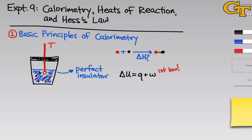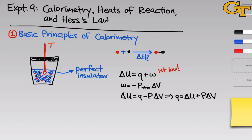Our calorimeter will be open to the air, meaning we're under constant pressure conditions — the constant pressure being the pressure imposed by the atmosphere. So the work associated with the change is equal to negative P delta V, the negative pressure times the change in volume. Substituting this into the first law gives delta U equals Q minus P delta V, and rearranging gives Q equals delta U plus P delta V. Since pressure is constant, delta P equals zero, which means the right-hand side corresponds to the change in the overall state function U plus PV, or what we call enthalpy. So Q equals delta H, meaning under constant pressure conditions, the heat absorbed or evolved by the reaction is equal to the change in enthalpy.